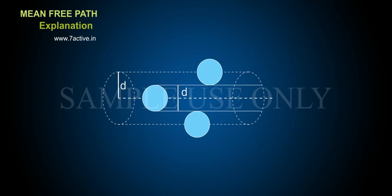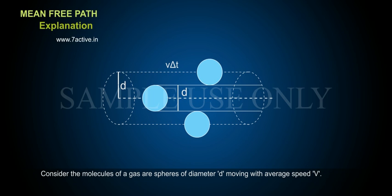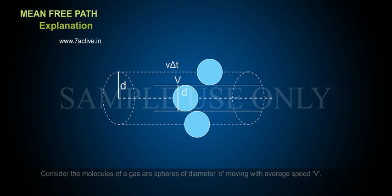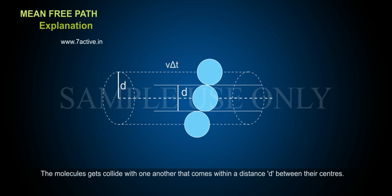Explanation: Consider the molecules of a gas are spheres of diameter d moving with average speed v. The molecules collide with one another that comes within a distance d between their centres.